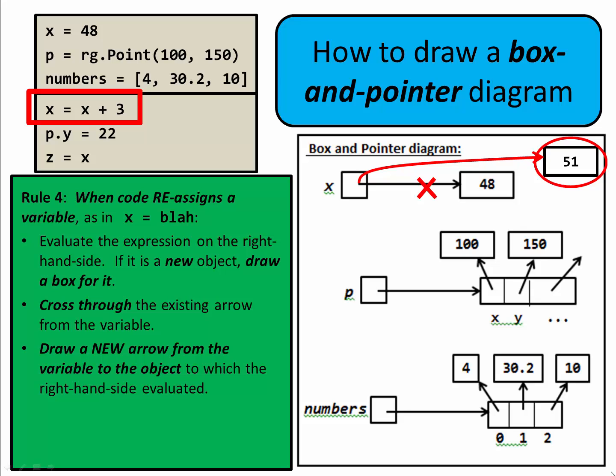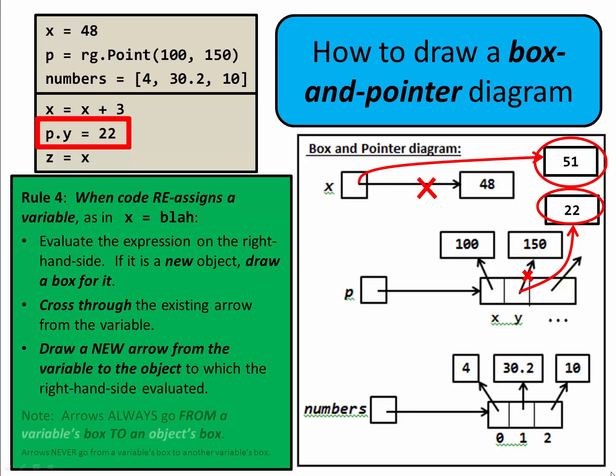Note that arrows always go from a variable's box to an object's box. The same rule applies to the line p.y = 22. We evaluate the right-hand side — it's 22, so we make a new box for it. We cross through the old arrow from y to the value it used to refer to, which was 150. Then we make a new arrow from p.y to the new box, 22.